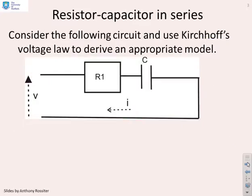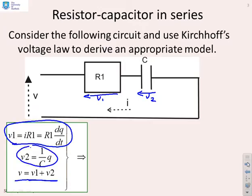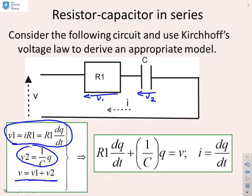As a reminder of the first-order video series: for a resistor and capacitor connected in series, we calculate the voltage across the resistor and the voltage across the capacitor, then use Kirchhoff's law to find the model. The voltage across the resistor is I·R, or R·dQ/dt; the voltage across the capacitor is Q/C. Kirchhoff's voltage law gives V = V1 + V2, yielding the first-order model discussed earlier.